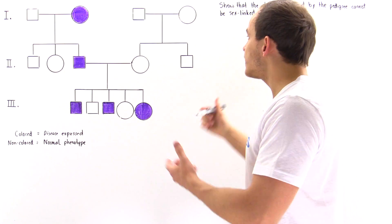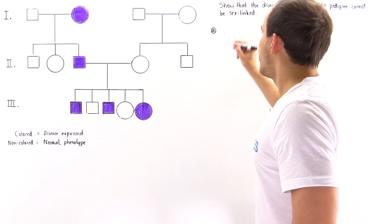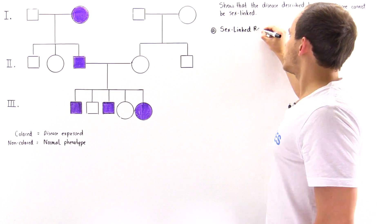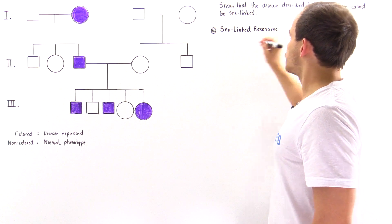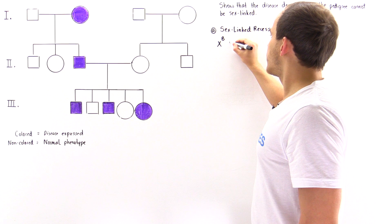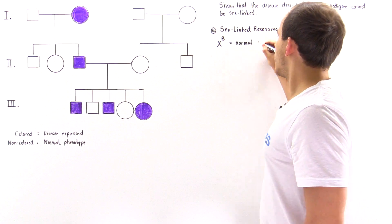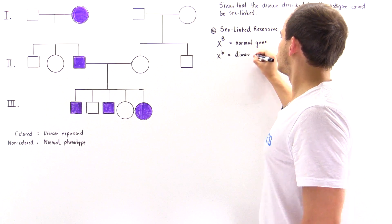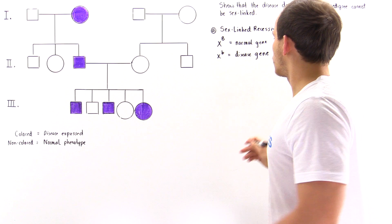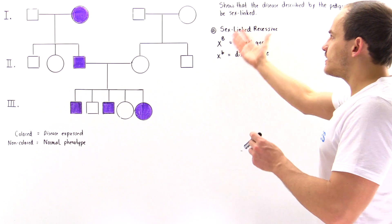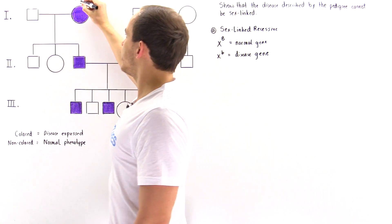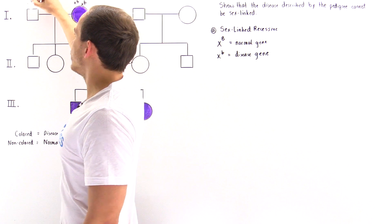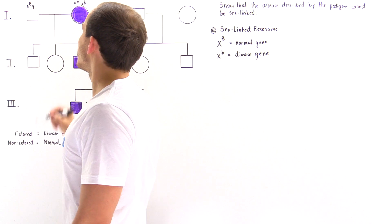To show that it's not something, we have to begin by assuming that it is. So let's begin by assuming that it is sex-linked recessive. If it's sex-linked recessive, X uppercase B describes the normal gene and X lowercase b describes the gene for that disease. This means this affected female individual must be X lowercase b, X lowercase b, and this normal male must be X uppercase B and Y.